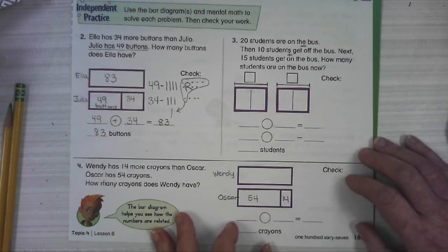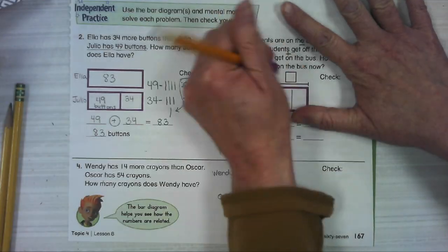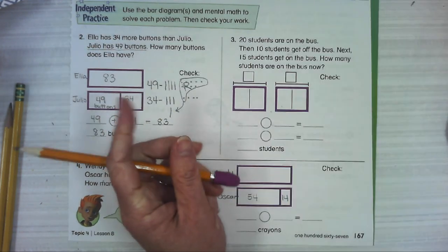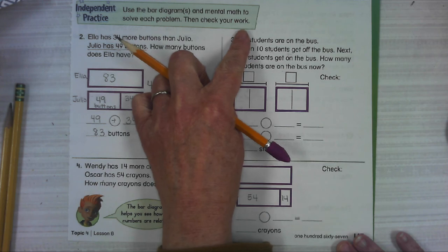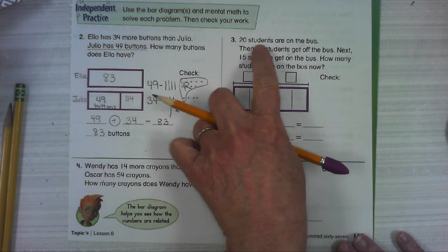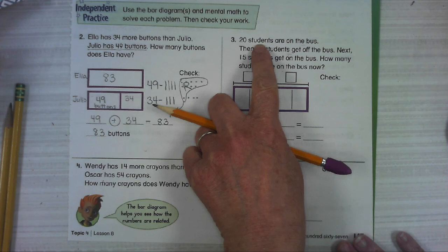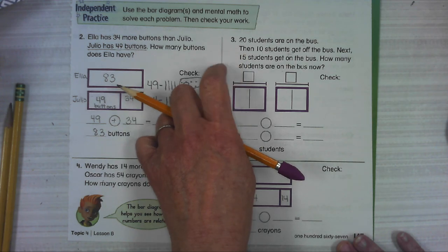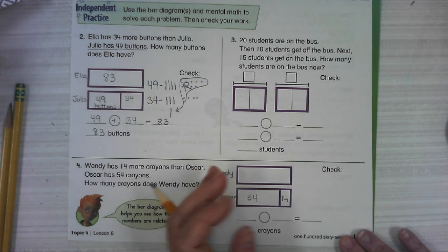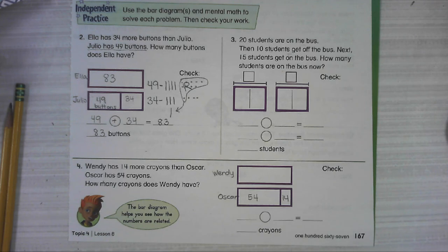All right, number three. Erase my marks from our lesson. Some students, I'm just covering up the numbers. Some students are on the bus. Then some students get off the bus. Next, some students get on the bus. How many students are on the bus now? All right, let's go back and do it so we can visualize just the action if we're not worried about those numbers.